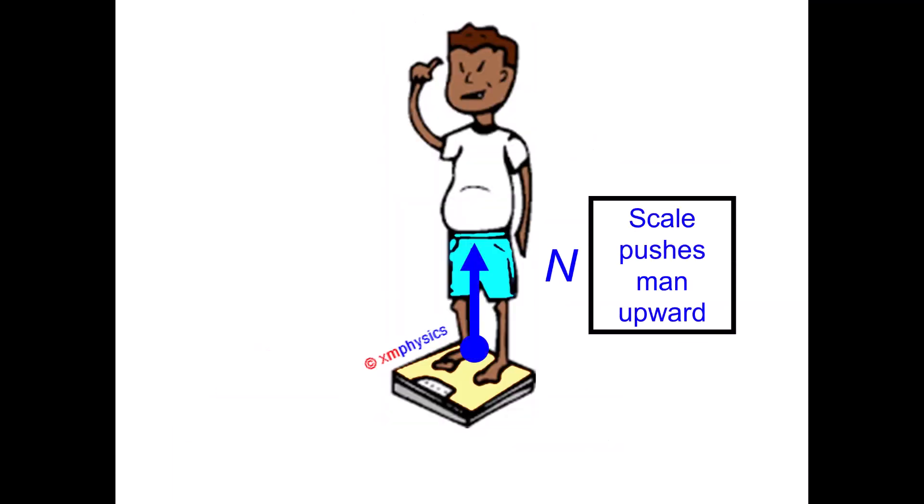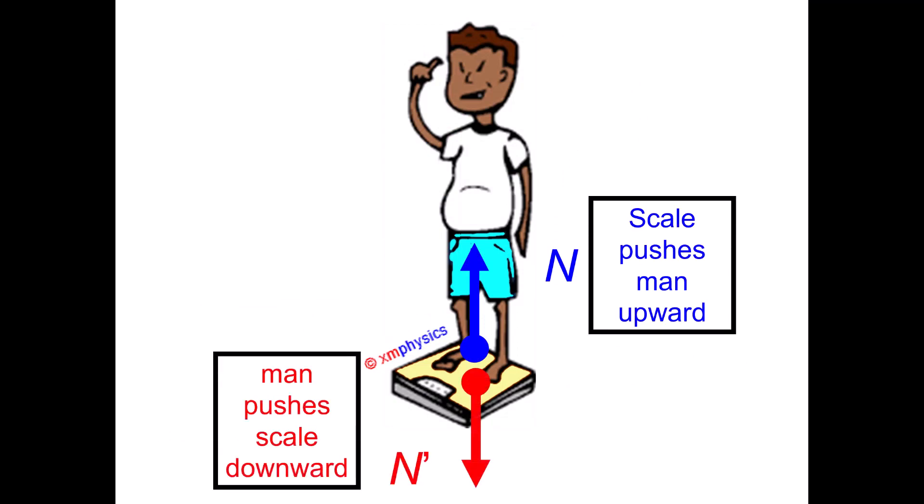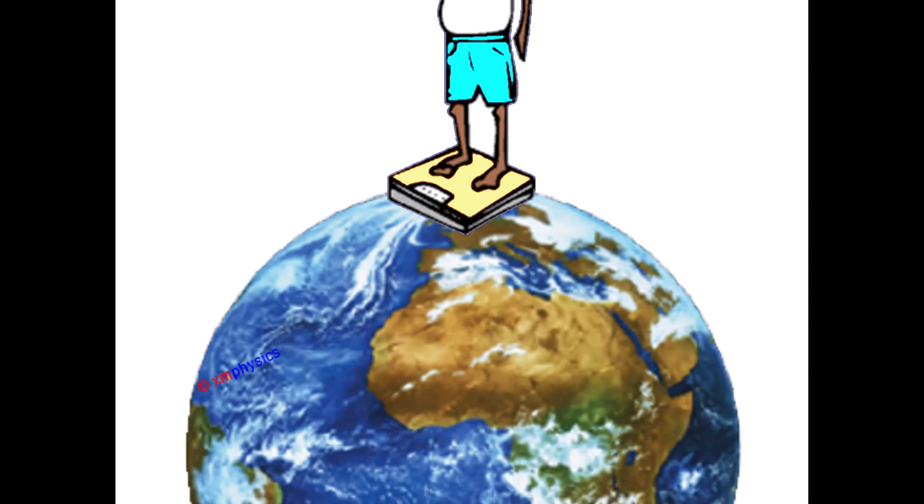The scale is pushing the man upward, and this happens only if the man is pushing the scale downward. These are the normal contact forces between the man and the scale — but what about the weight?